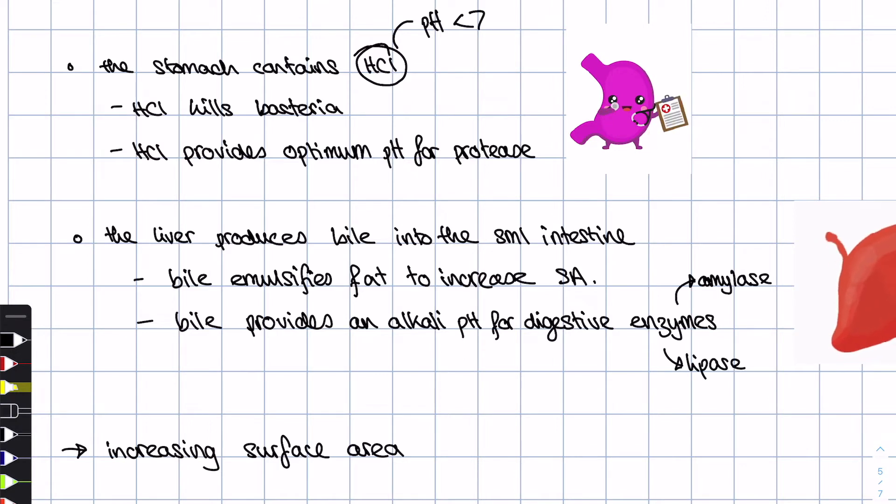First of all, the stomach contains hydrochloric acid, HCL for short, and as you can tell by the name, that means it has a pH which is less than 7. It's a very acidic condition. There's two things which HCL does. First of all, it kills bacteria, meaning that any bacteria that we have ingested with our food doesn't cause an infection. The second thing is HCL provides the optimum pH for protease enzyme. Remember we said that protease helps to break down proteins into amino acids, but another fact is that protease works in very acidic conditions. In the stomach, we have an acidic condition of around pH 2 to 3, and that means that protease can break down protein here as fast as possible.